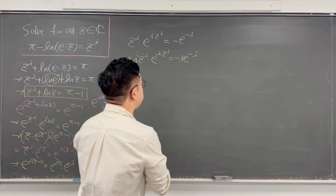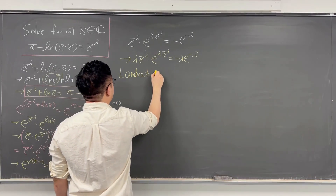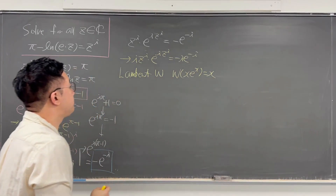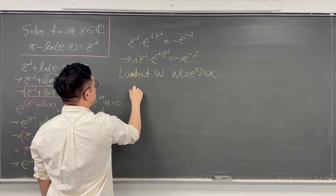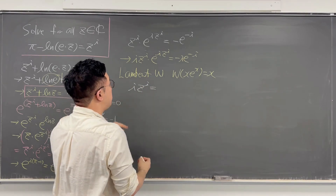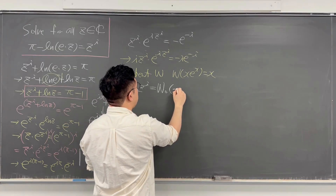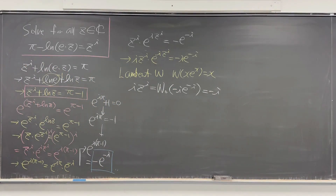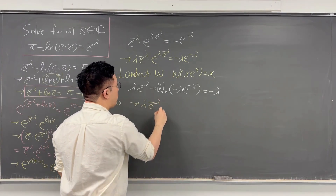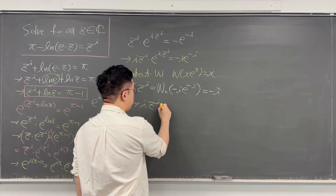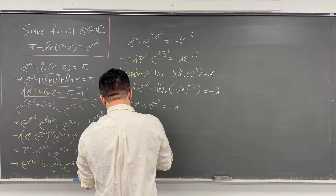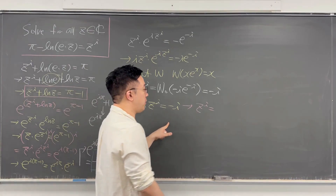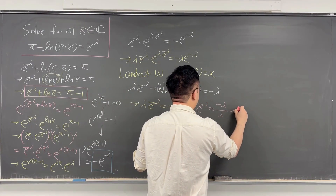So now we can say i times e to the power of i must equal Lambert W₀ of negative i times e to the power of negative i, which equals negative i. So i times e to the power of i equals negative i. Dividing both sides by i, z to the power of i equals negative i over i, which equals negative 1.